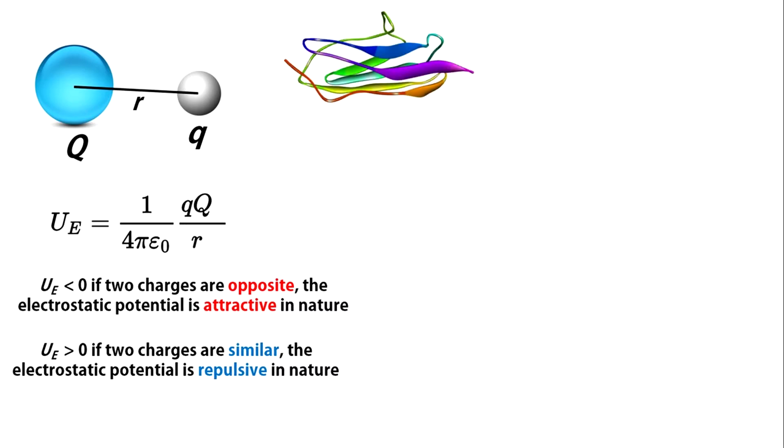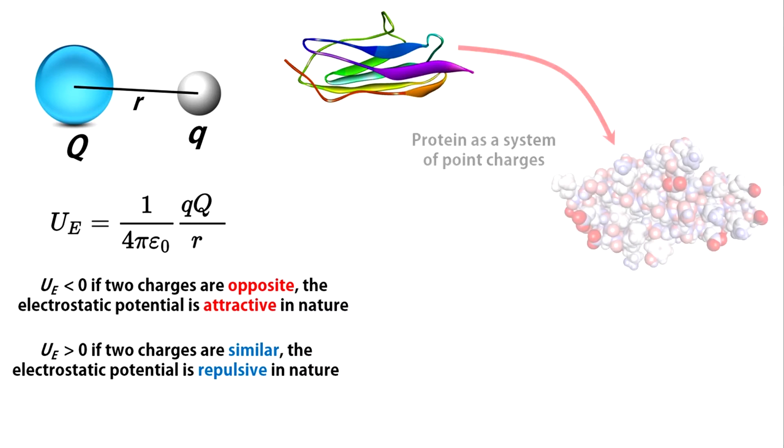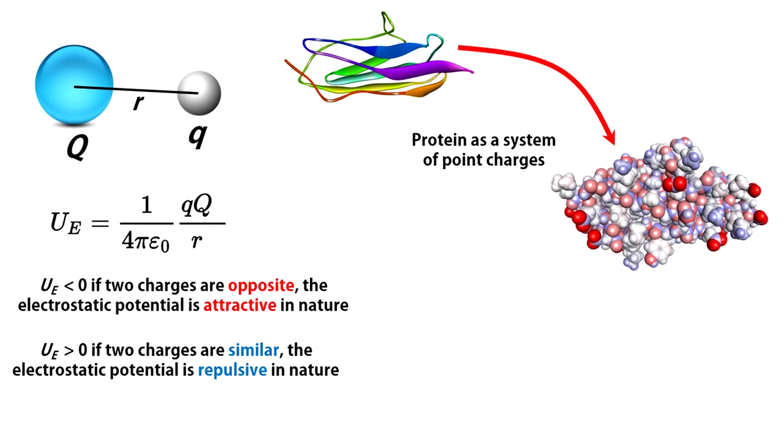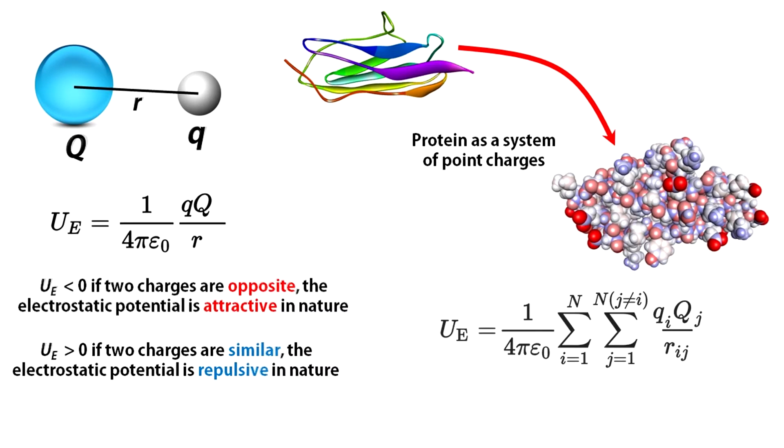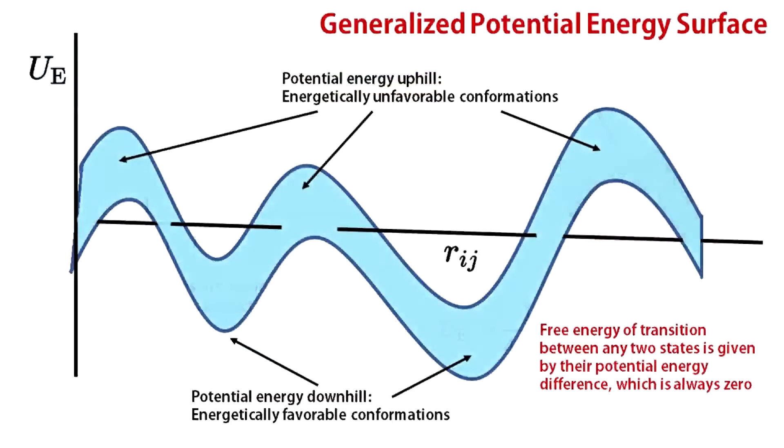A protein can be viewed as a system of many charged particles, and its potential energy can be simply written as the following. The Rij values represent different conformational states. Generally, you can plot this potential energy as a surface where each point represents the energy of a given conformation. This is called the potential energy landscape.